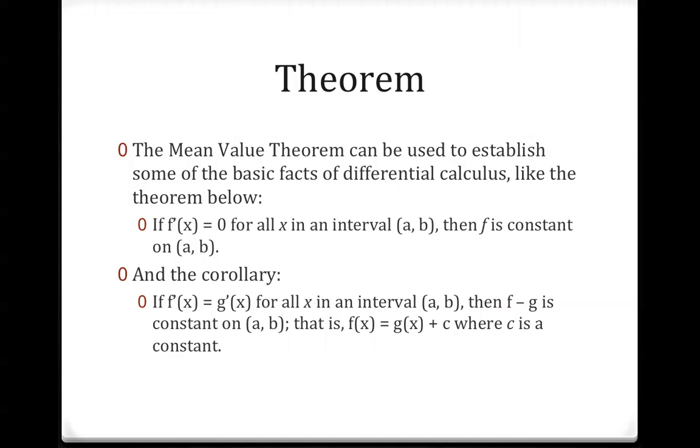And there's a corollary: If f'(x) = g'(x) for all x in an interval (a,b), then f - g is constant on (a,b). That is, f(x) = g(x) + c where c is a constant.